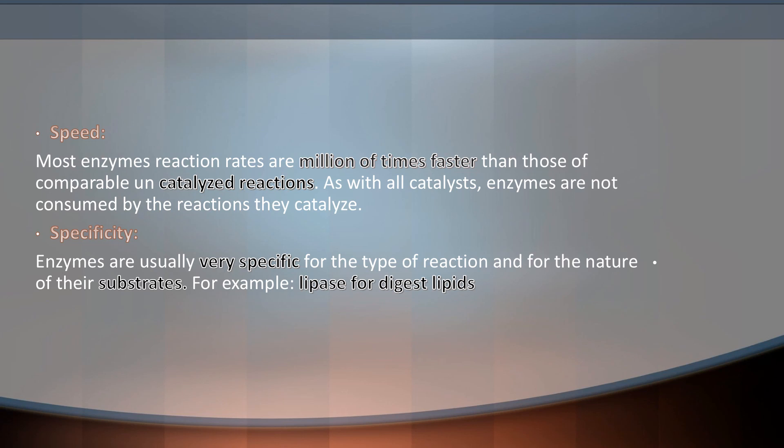Cofactors can be either organic or inorganic. Inorganic cofactors are metal ions, while organic cofactors include flavins and hemes. If organic cofactors are tightly bound to the enzyme, they are called prosthetic groups. If organic cofactors are loosely bound to the enzyme, they are called coenzymes.